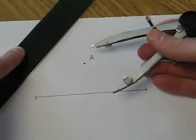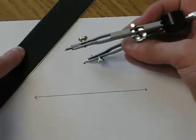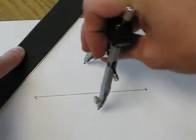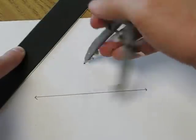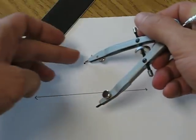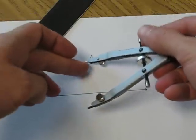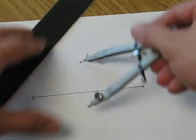First we need to take our compass and make an arc that passes through our given line twice. The key here is make sure that your radius is farther than the line itself.